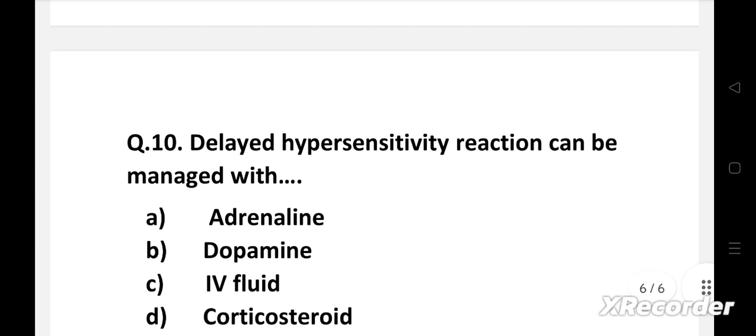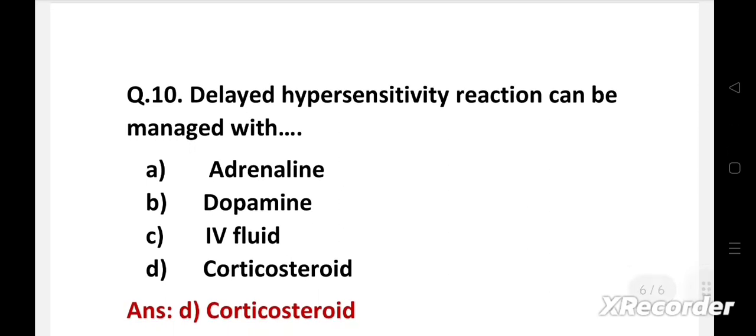Next question. Delayed hypersensitivity reaction can be managed with: option A adrenaline, B dopamine, C IV fluid, D corticosteroid. Right answer is option D, corticosteroid. In case of delayed hypersensitivity reactions, corticosteroids are used. It is an immunologic reaction that is mediated primarily by T cells and monocytes and it presents hours to days after the antigen processes into the skin.